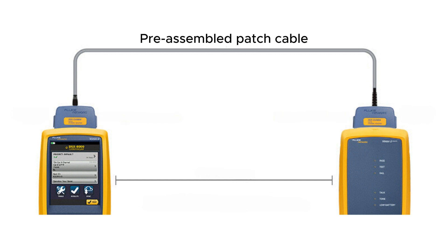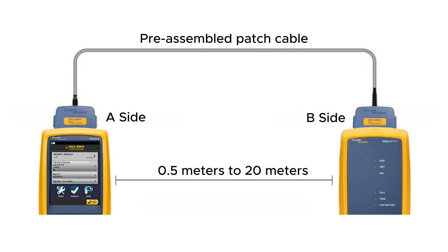The gray cord is a pre-assembled cable connected on both ends. The test starts from the A-side of the Fluke meter and ends at the B-side of the device. The patch cord length may vary from 0.5 meters to 20 meters or so.